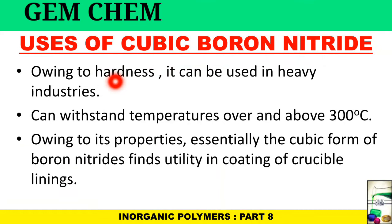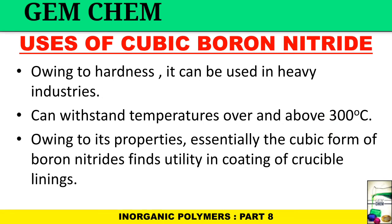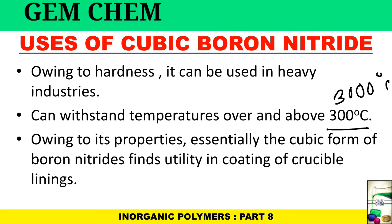The uses of cubic boron nitride stem from its hardness: it is used in heavy industries and can withstand temperatures above 3000°C, making it suitable for high-temperature product generation. It is also used for coating crucible linings in laboratory settings.